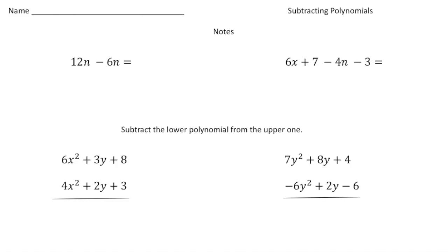The key rule about subtracting polynomials is that the terms have to be like terms. For example, here we have 12n minus 6n, and because these are like terms, 12n take away 6n will give you 6n.